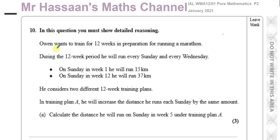It says: Owen wants to train for 12 weeks in preparation for running a marathon. During the 12-week period, he will run every Sunday and every Wednesday. On Sunday in week 1 he will run 15 kilometres, and on Sunday in week 12 he will run 37 kilometres. He considers two different 12-week training plans.